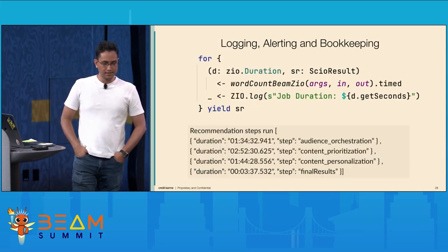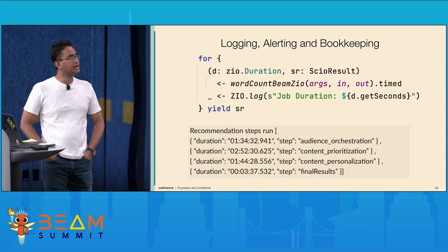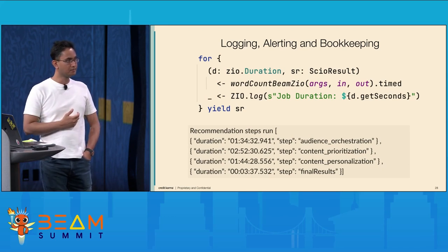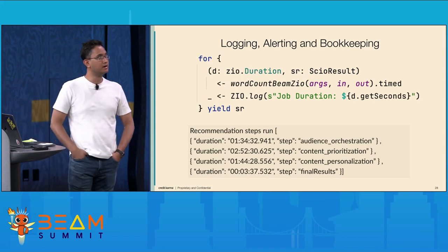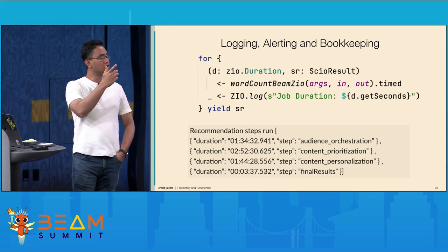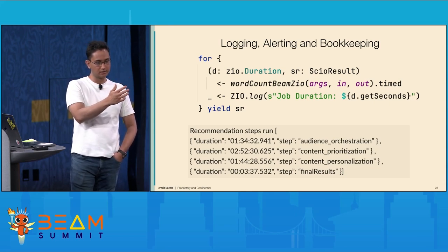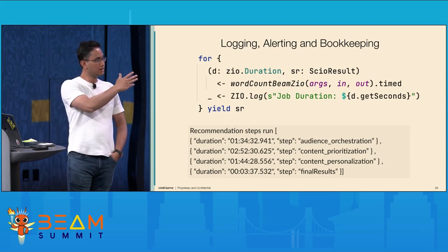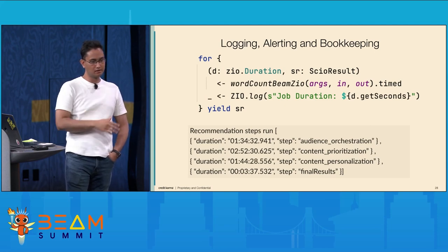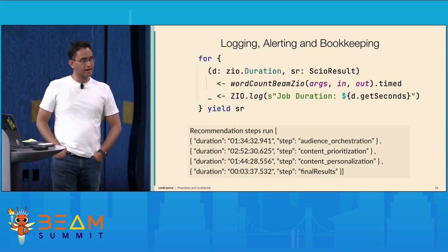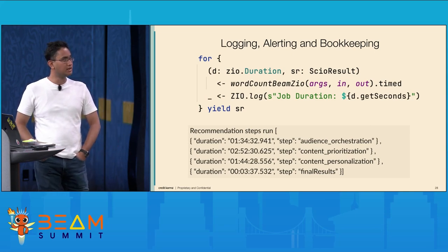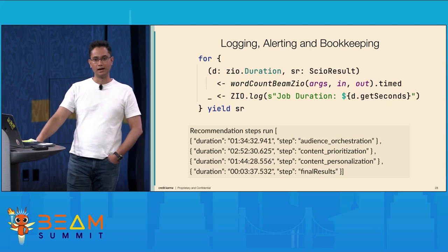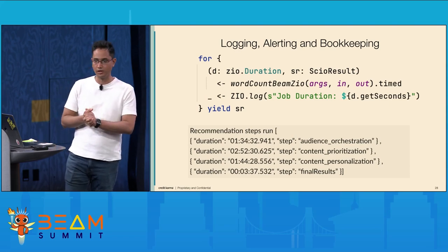We also have to worry about bookkeeping and logging. We need to know how long our Dataflow jobs are taking, and ZIO's timed construct makes this easy. It not only runs the job but gives you the output and the duration. Here's a screenshot from a Slack channel where we log different jobs and their durations. You can log to Slack, Log Explorer, Splunk, or any other logging framework and build nice dashboards.